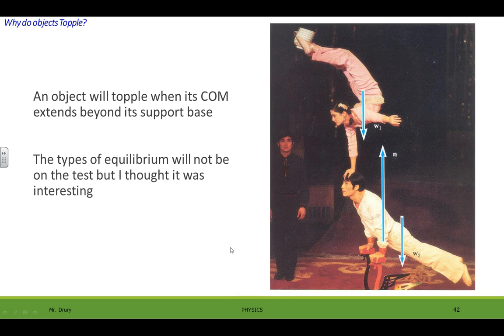And we're going to talk a little bit about the different types of equilibriums. It's not gonna be on your test but I thought it was kind of interesting so I wanted to explain it to you. So why do objects topple?